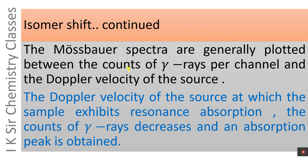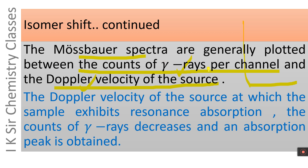Mössbauer spectra are generally plotted between the counts of gamma rays per channel and the Doppler velocity of the source. On the x-axis we take Doppler velocity of the source, and on the y-axis we take counts of gamma rays per channel. The detector used in Mössbauer spectroscopy instrumentation is a multi-channel analyzer, which gives the counts of gamma rays in different channels.